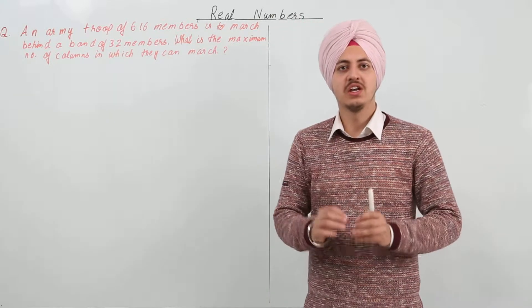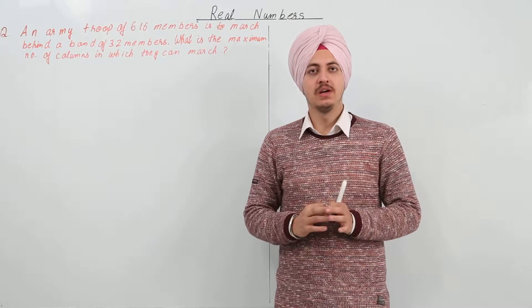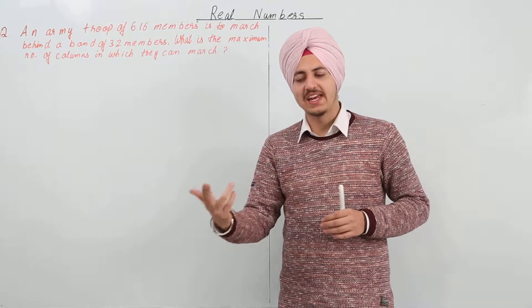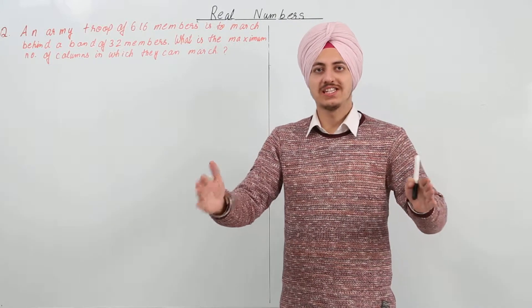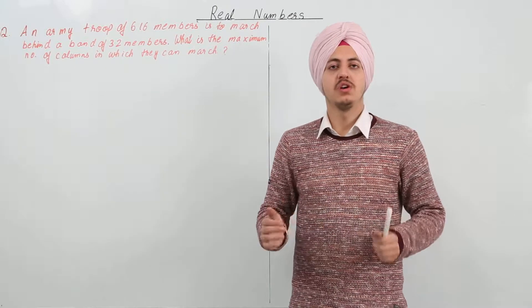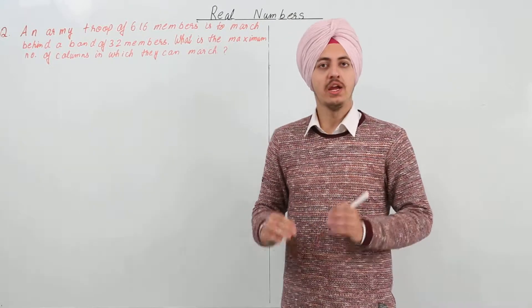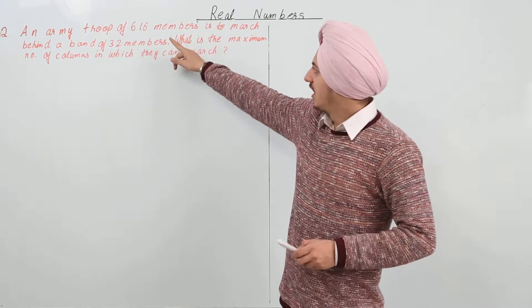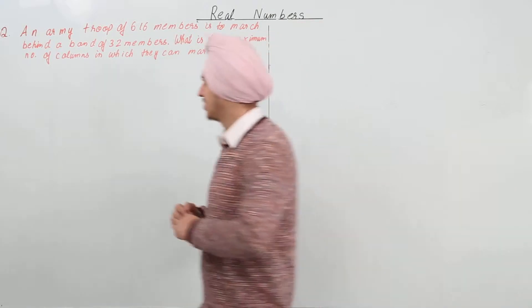That will give us the maximum number of columns or maximum lines in which these 616 members and these 32 members will fit in perfectly. So we have to find out the HCF in this question for 616 and 32.